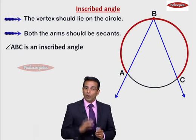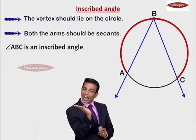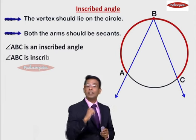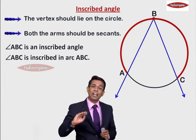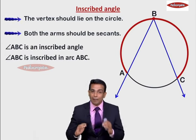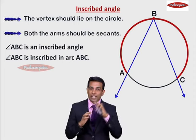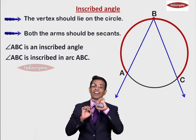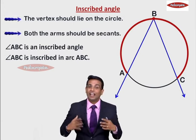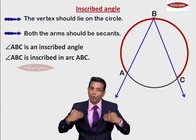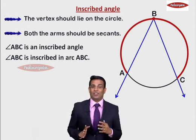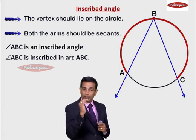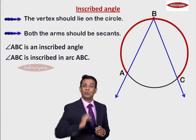For angle ABC, the vertex is B. Is this B lying in arc ABC? It is lying in arc ABC. That means the same thing can be written this way: angle ABC is inscribed in arc ABC. "Inscribed in" means lying in. So angle ABC is lying in arc ABC because its vertex B is lying in arc ABC. When I say an angle is inscribed in an arc, it means that angle's vertex is lying in that particular arc.